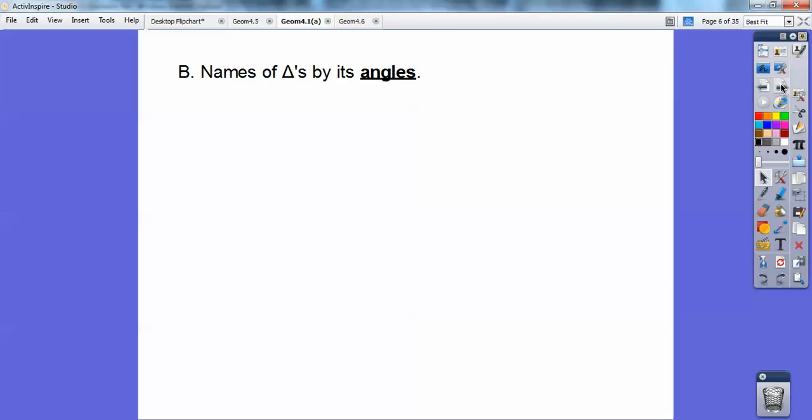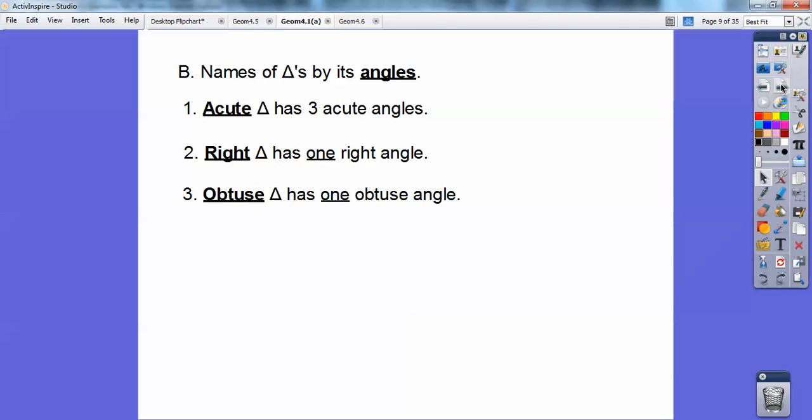Names of triangles by the angles. An acute triangle has three acute angles, so they're all less than 90. That's what acute means. A right triangle has one right angle in it. An obtuse triangle has one obtuse angle in it. So right is 90, and obtuse is greater than 90.